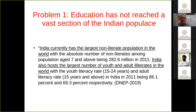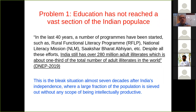The first problem is that education has not reached a vast section of the Indian population. Even the education policy document — from the draft released in 2019 — stated that India currently has the largest non-literate population in the world, with 282.6 million non-literates among the population aged 7 and above in 2011. India also hosts the largest number of youth and adult illiterates in the world. This is the ground reality we are trying to tackle. In the last 40 years, a number of programs have been started such as the Rural Functional Literacy Program, the National Literacy Mission, and Sakshar Bharat Abhiyan.